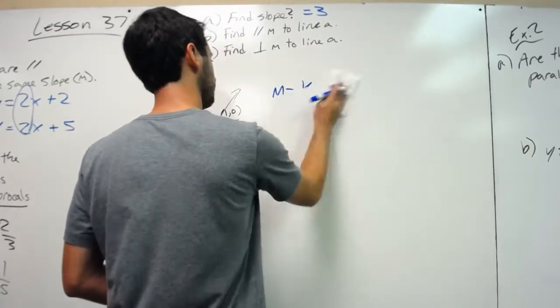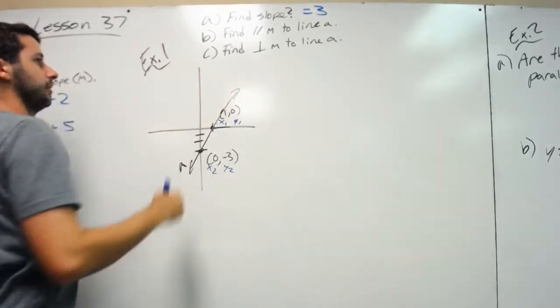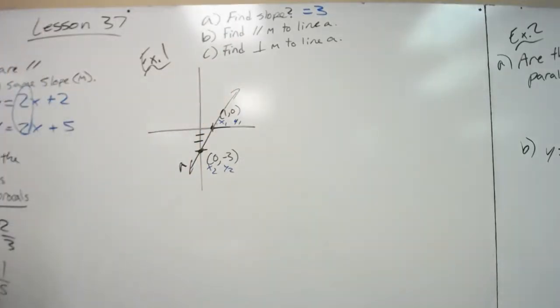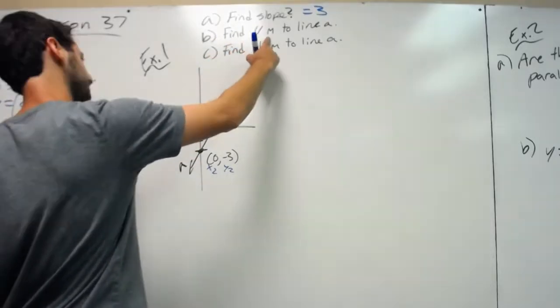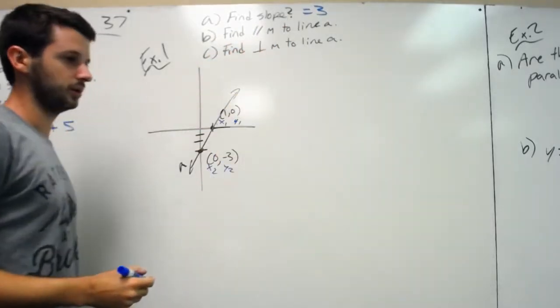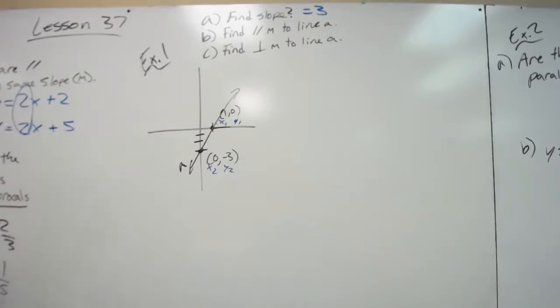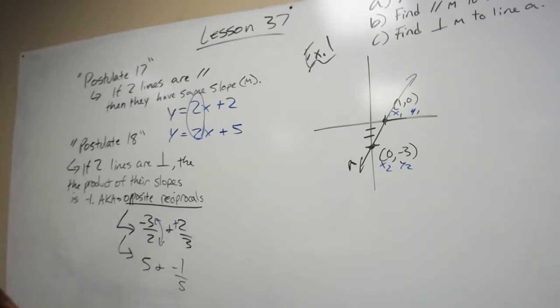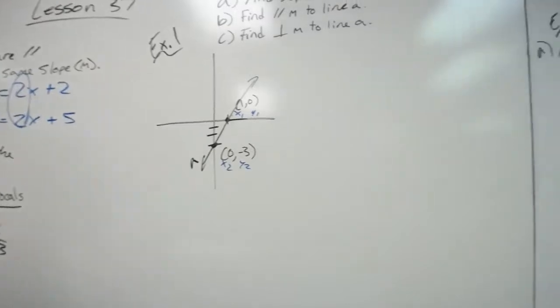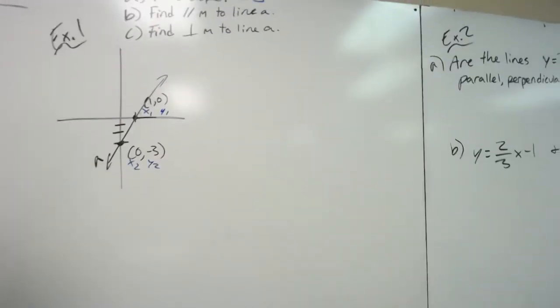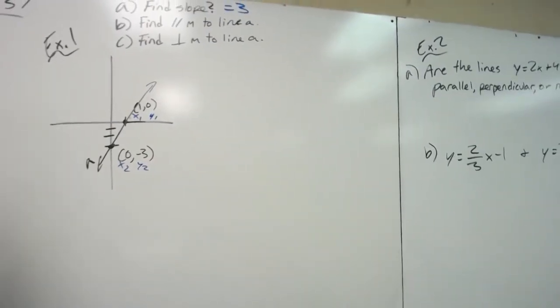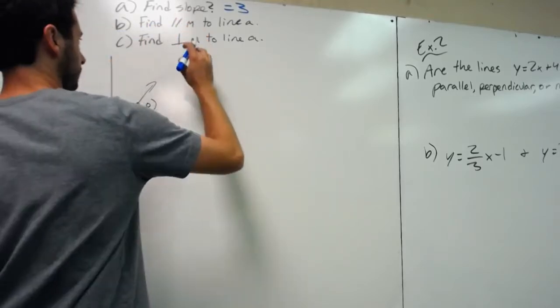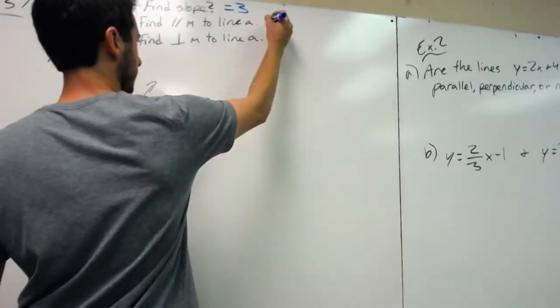The next question says find a parallel slope to line A. Like we said in postulate 17, if two lines are parallel, they have the same slope. So for there to be a parallel slope to line A, it would have to be 3, the same as what we already have.